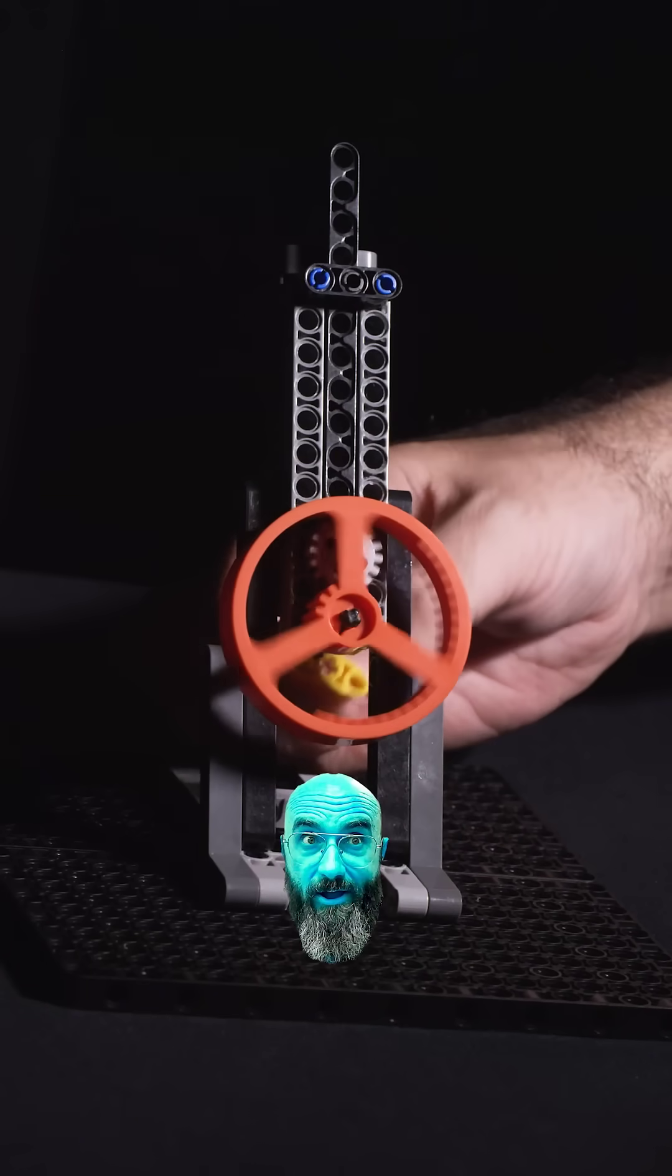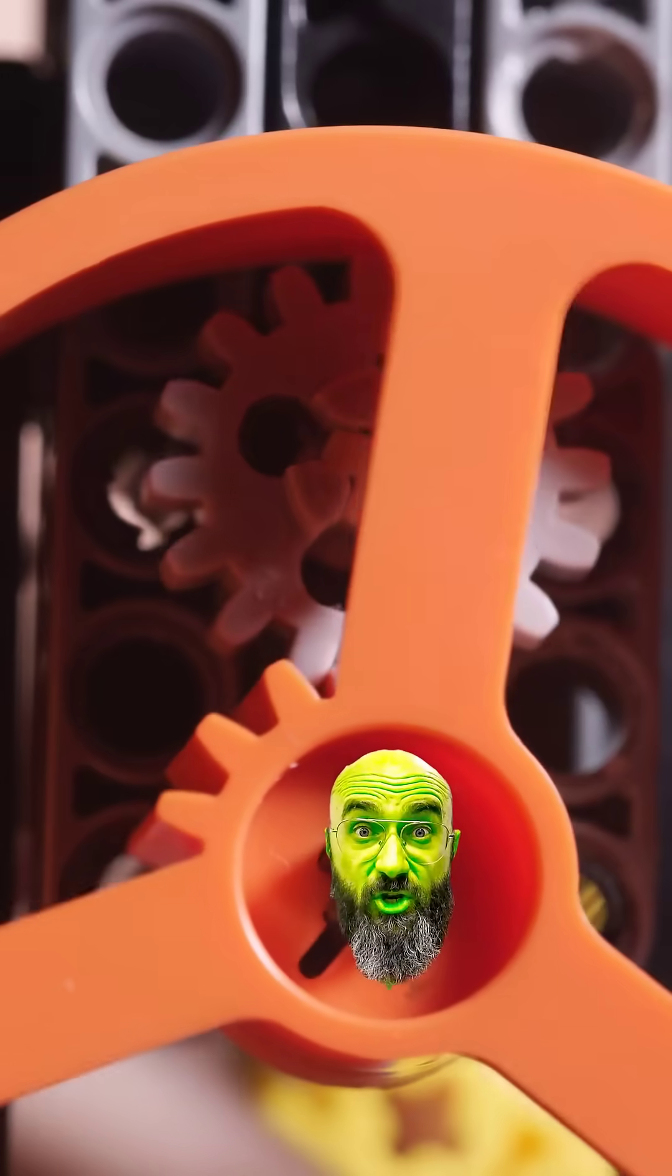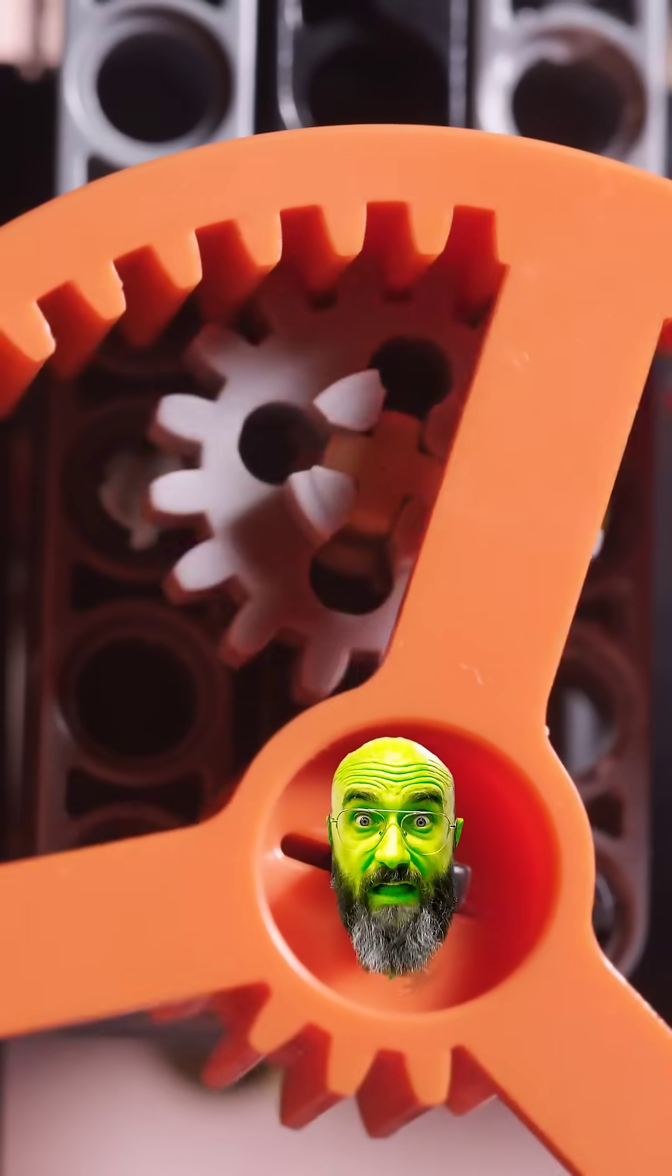Can you figure out what's going on here? That's right, these are direction changing gears. The small gear meshes with the lower teeth and turns clockwise until it's caught by the upper teeth and turned counterclockwise.